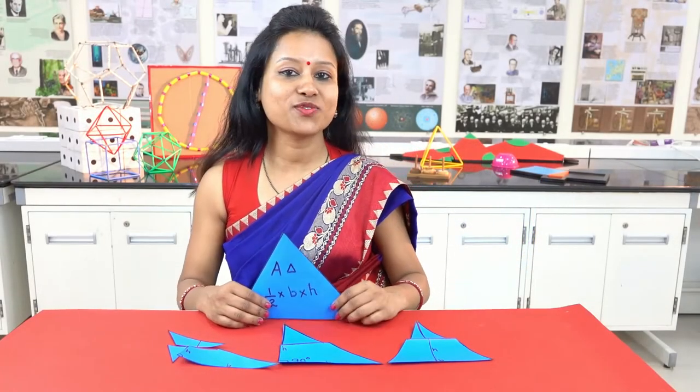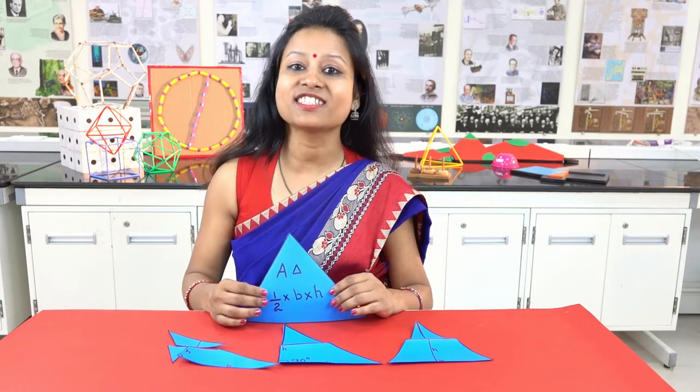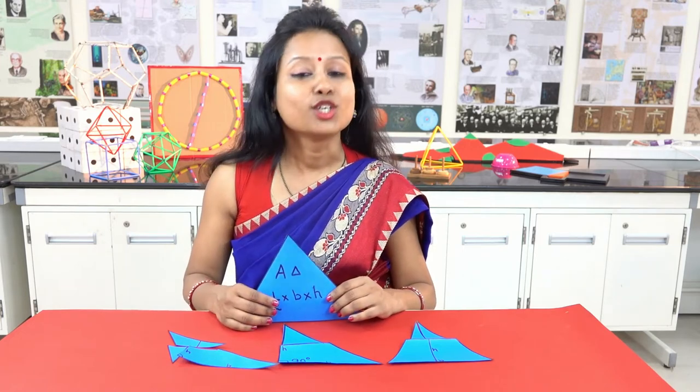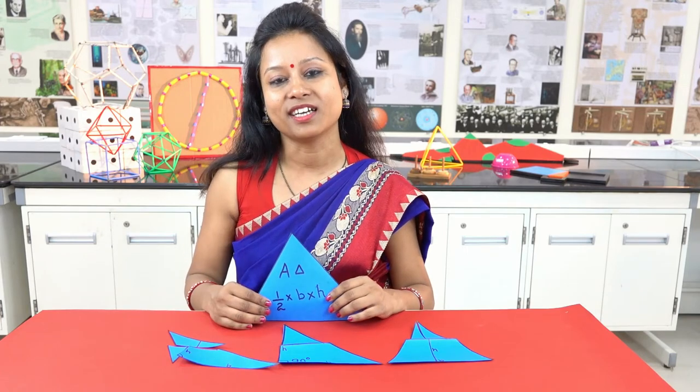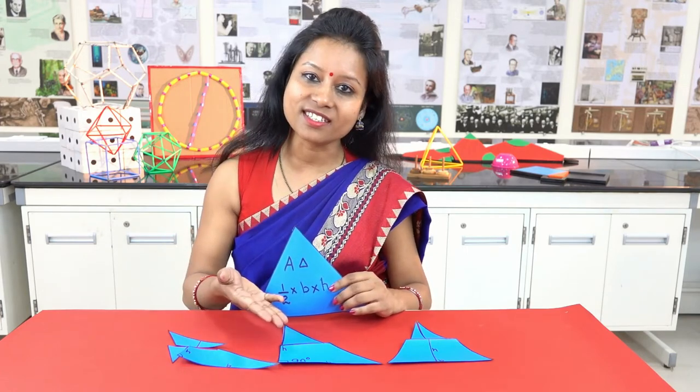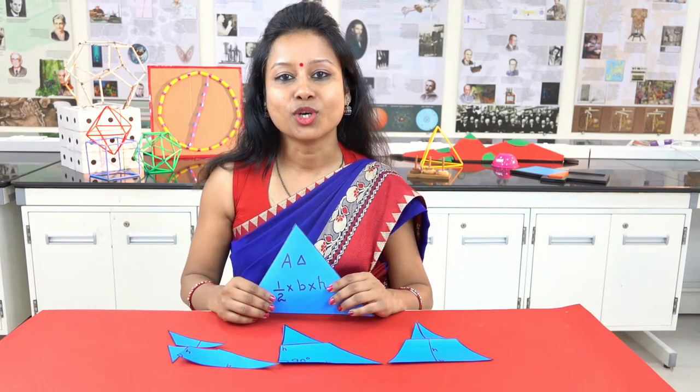So friends, we have seen that area of the triangle is half base times height. You don't have to remember or memorize the formula. You have found yourself in all the three cases it is true.